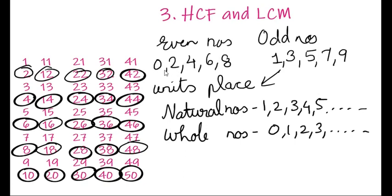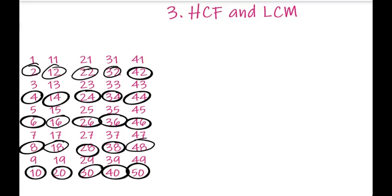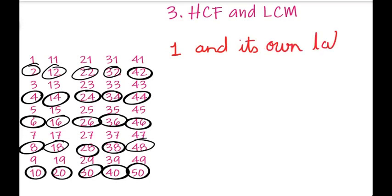Now let us learn another type of number that is prime numbers, which will help us in this lesson. The numbers which are divisible only by 1 and by the number itself are called as prime numbers. So prime numbers are numbers which have exactly two factors: 1 and the number itself.